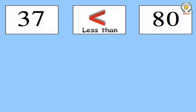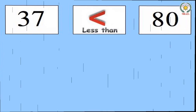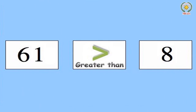Now let's do this number sign. 80 is bigger than 37, so we give it the greater number sign. Second example: 61 and 8. 61 is bigger than 8, so here we will give the greater number sign.